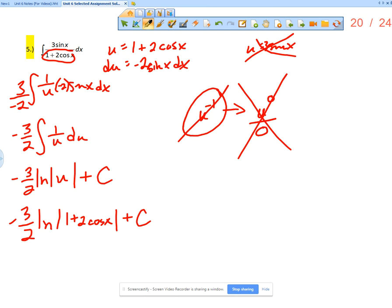Then, anytime you have the natural log of the absolute value of something, you need to consider whether or not the thing in here is strictly positive, which would necessitate no absolute value bars. So 1 plus 2 cosine x. Well, let's think about cosine x.